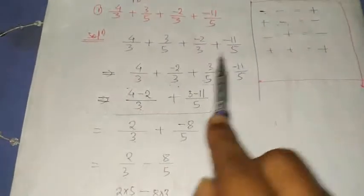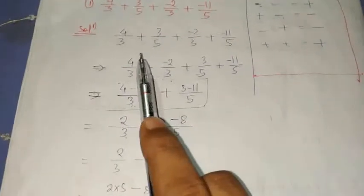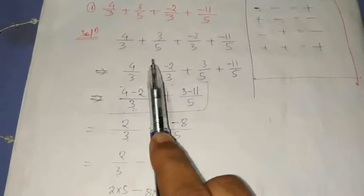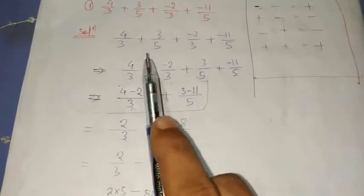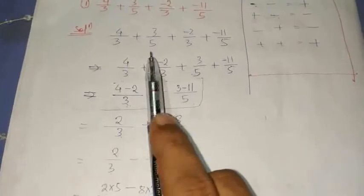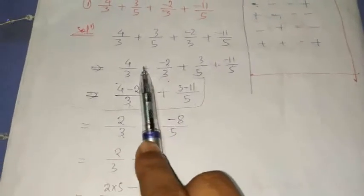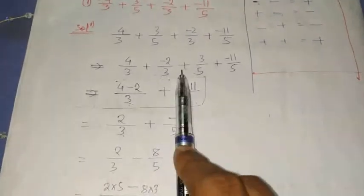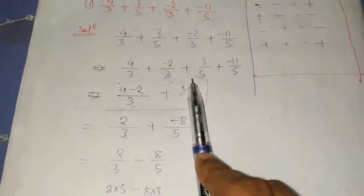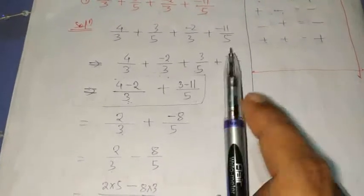First write the equation, then write the original number. Write the number terms together — those who have the same denominator. So we get: 4 by 3 plus minus 2 by 3, plus 3 by 5 plus minus 11 by 5.